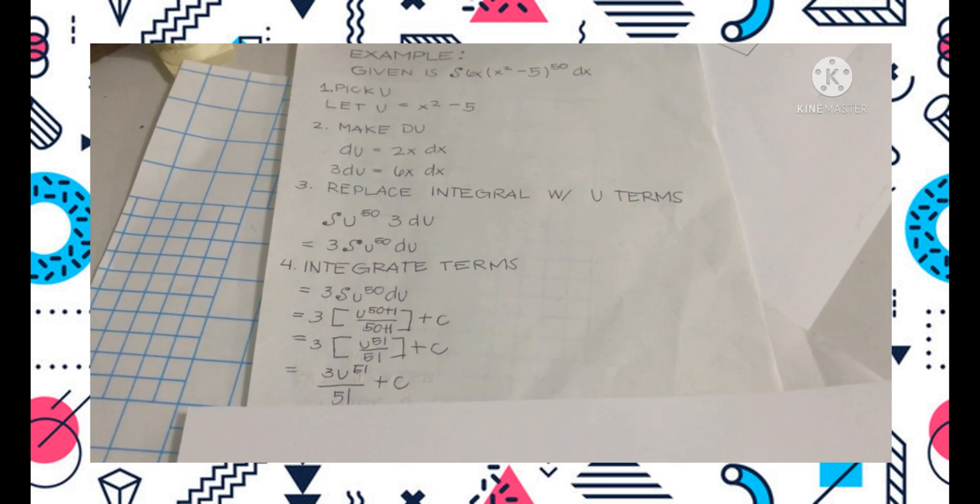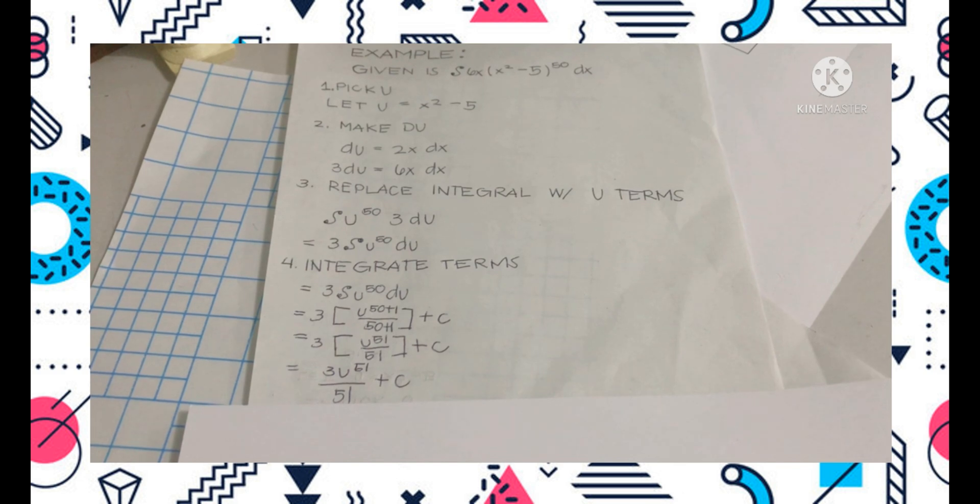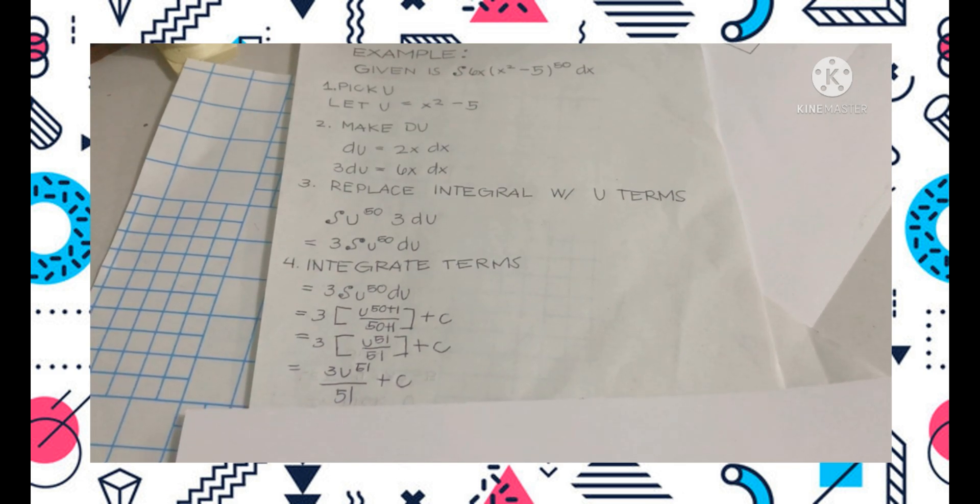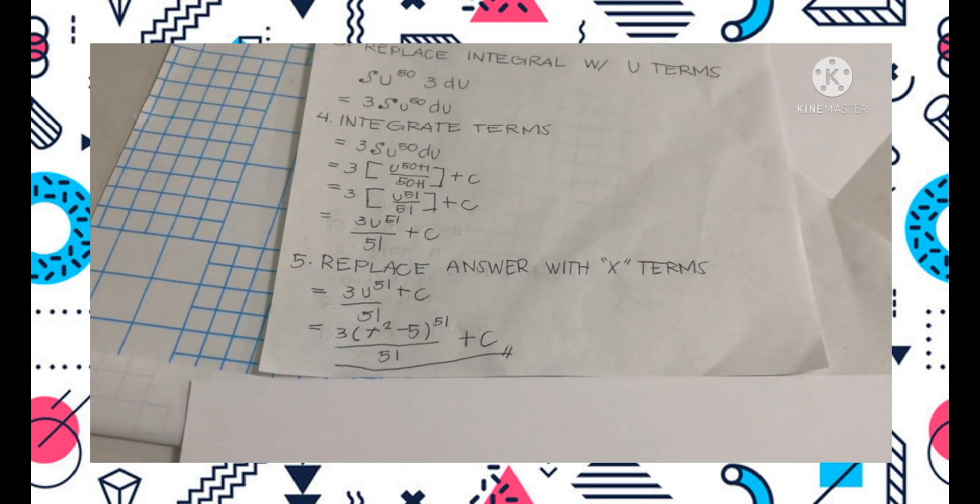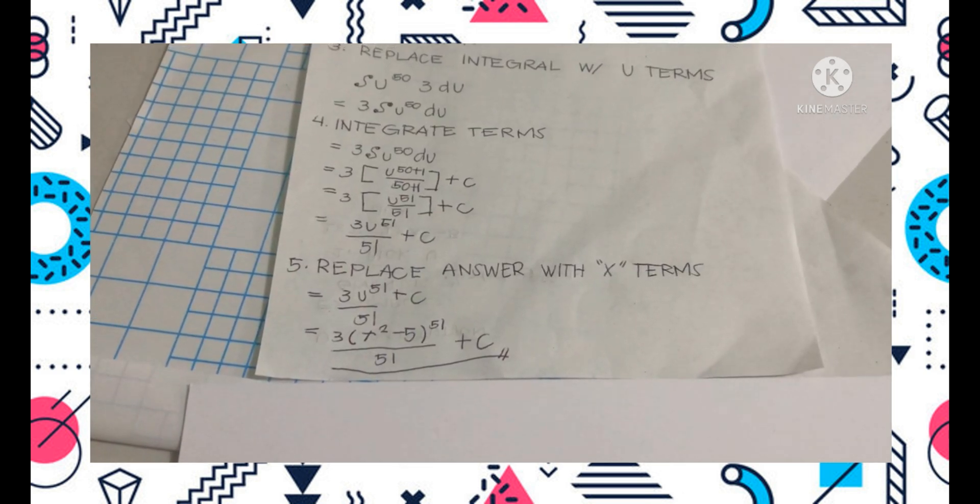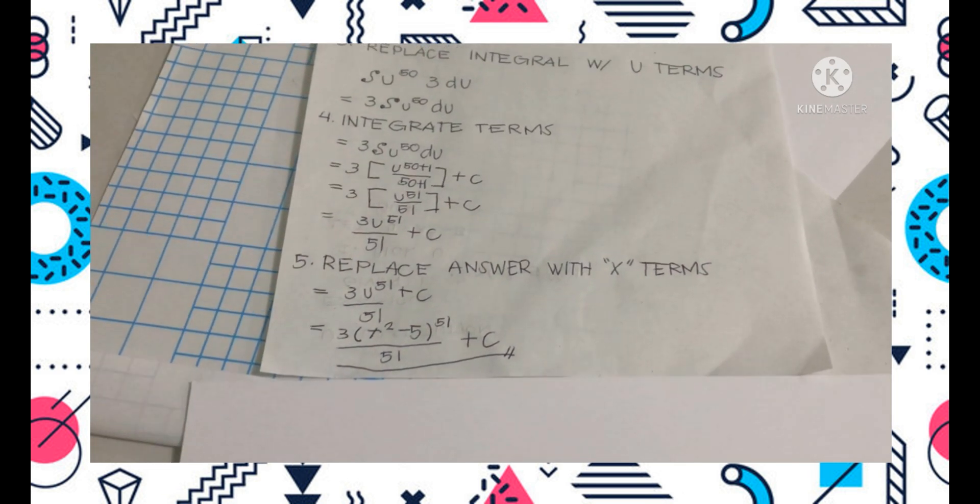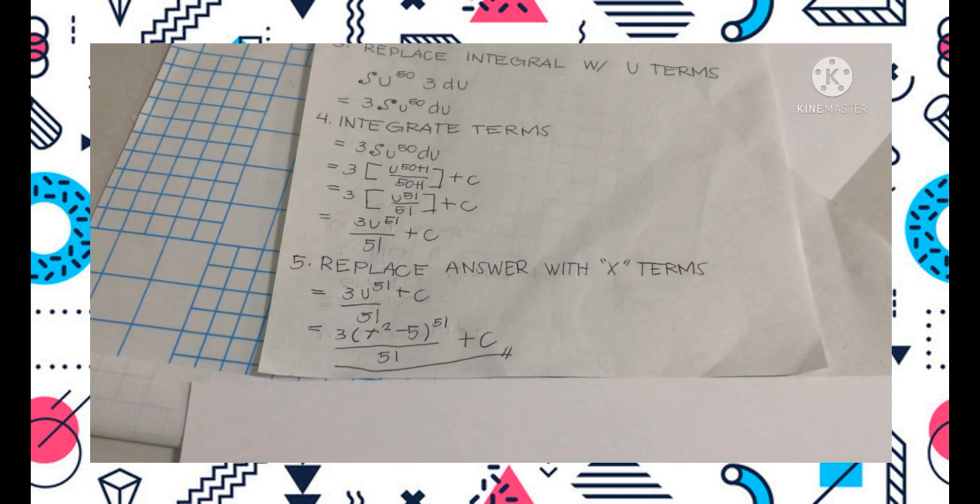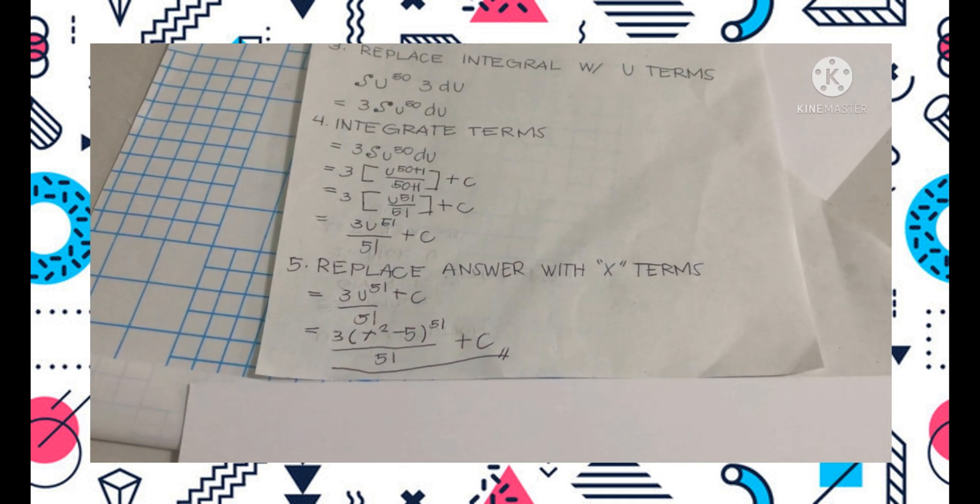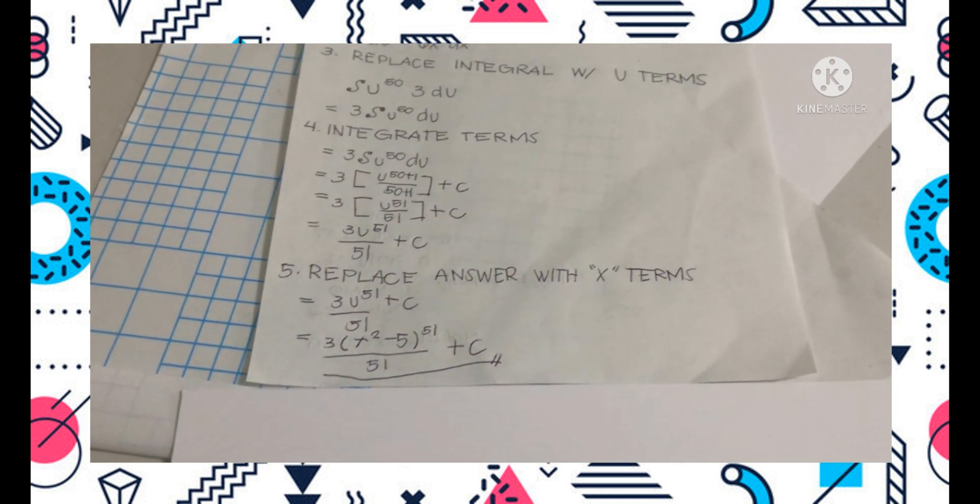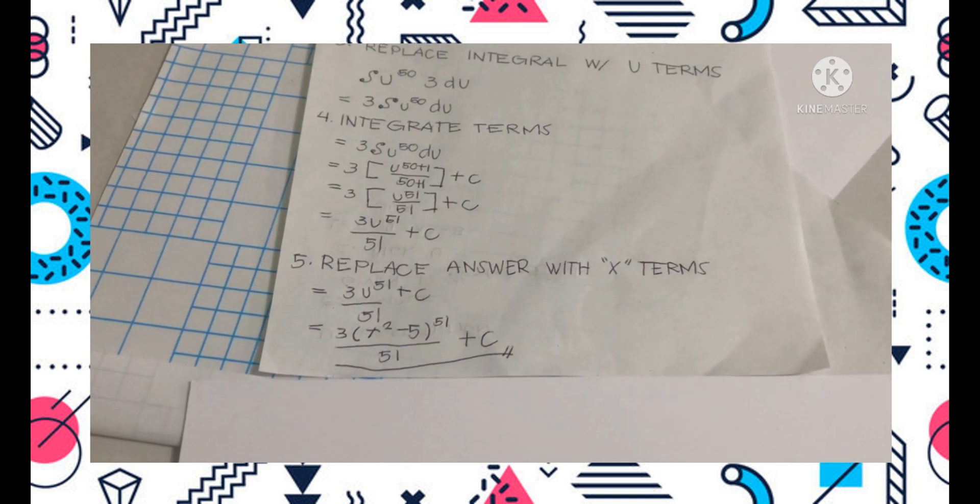We can simplify it so it becomes 3 u raised to 51 over 51 plus c. In the last step, we must replace u with the x term. As we recall, u is equivalent to x raised to 2 minus 5. So that is our final answer.